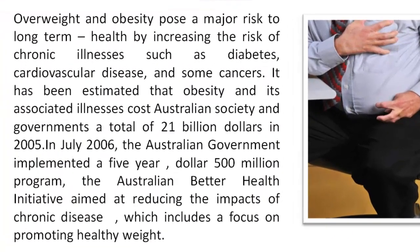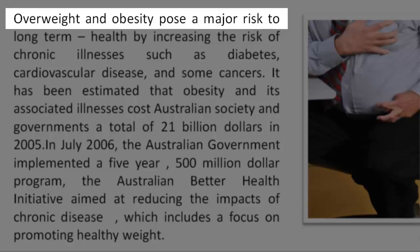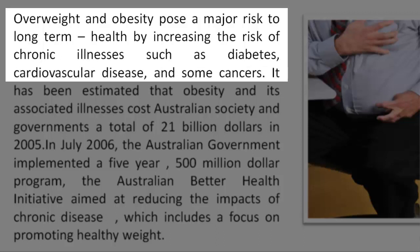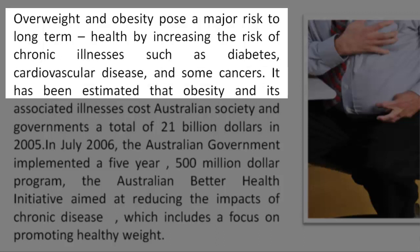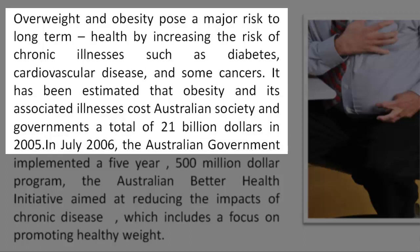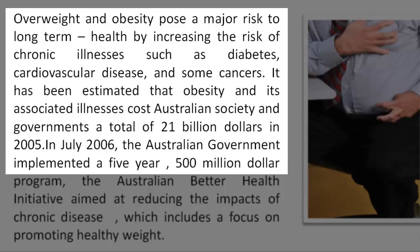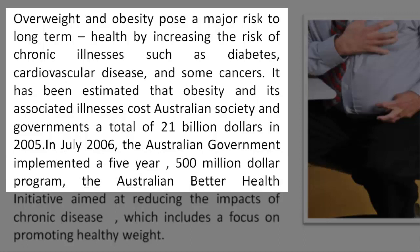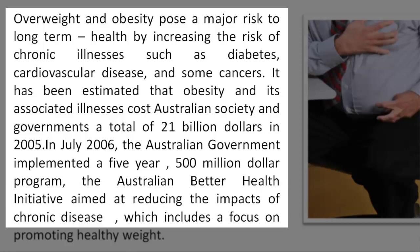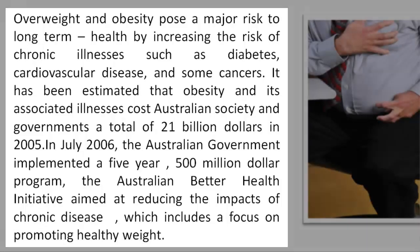Reading 2. Overweight and obesity pose a major risk to long-term health by increasing the risk of chronic illnesses, such as diabetes, cardiovascular disease, and some cancers. It has been estimated that obesity and its associated illnesses cost Australian society and governments a total of $21 billion in 2005. In July 2006, the Australian government implemented a five-year, $500 million program — the Australian Better Health Initiative — aimed at reducing the impacts of chronic disease, which includes a focus on promoting healthy weight.